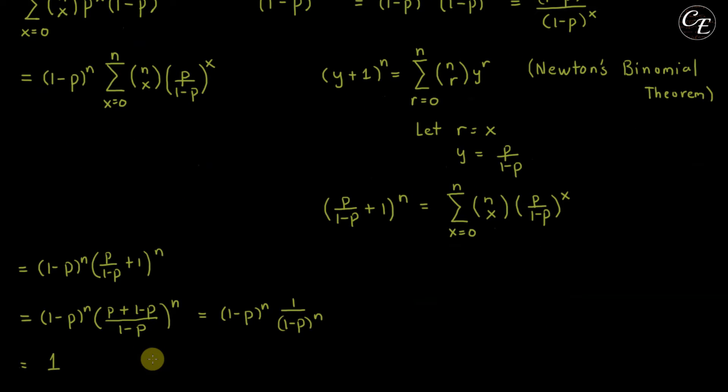Now we can simplify this by having a common denominator 1 minus p, so we will have here p plus 1 minus p over 1 minus p raised to n, and we can cancel out p and negative p. 1 raised to n is still 1, so we'll get 1 and then here the denominator 1 minus p raised to n.